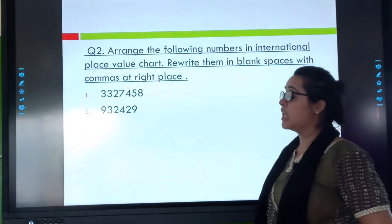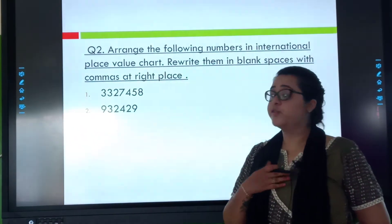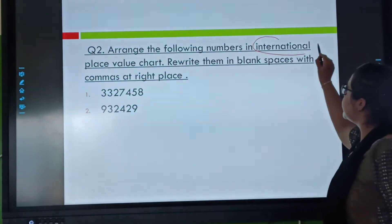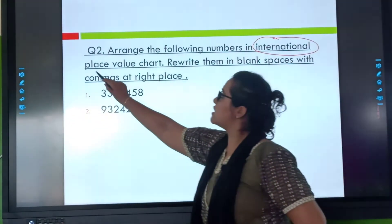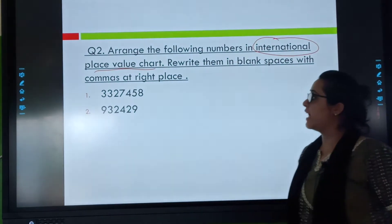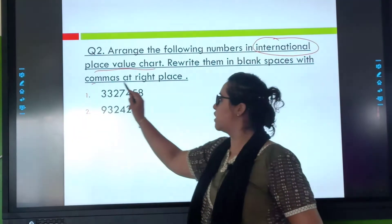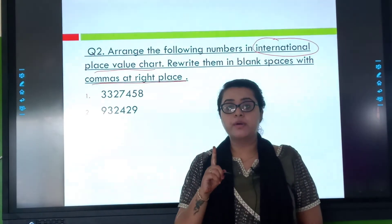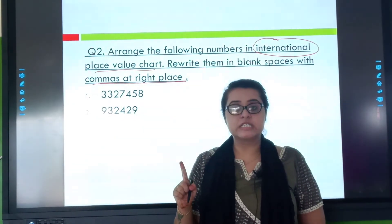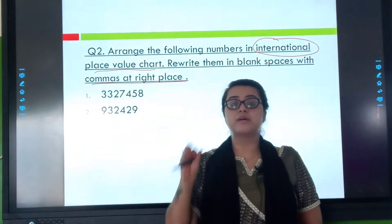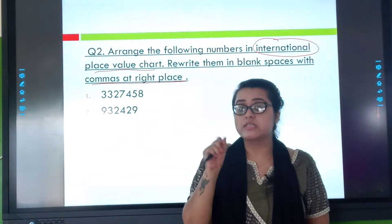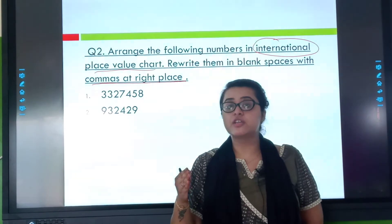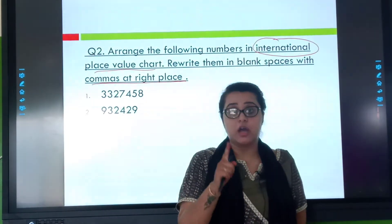In the second question, I have to rewrite this number as per the international place value chart and insert the commas at the right places. Remember, in the international system, every family has three members. So after every three-digit group, I will insert the commas.